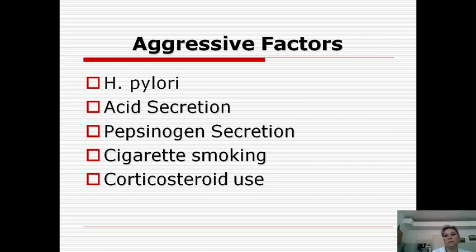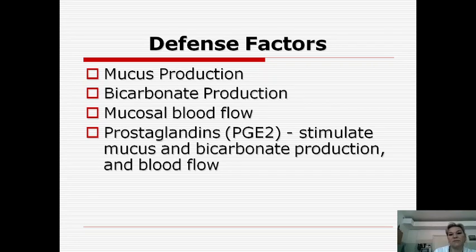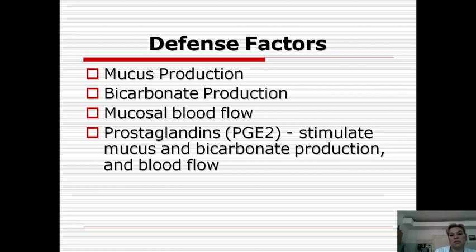I want to describe the aggressive and defense factors of the stomach. The aggressive factors that can lead to diseases of the stomach include: Helicobacter pylori infection, acid secretion, pepsin secretion, cigarette smoking, and corticosteroid use. The defense factors include mucus production, bicarbonate production, mucosal blood flow, and prostaglandins, which stimulate mucus and bicarbonate production and blood flow. Imbalance between these factors can lead to diseases of the stomach.